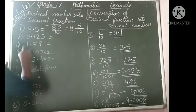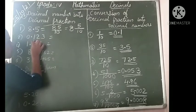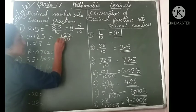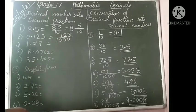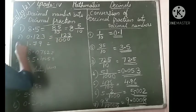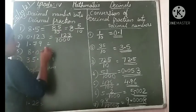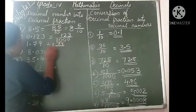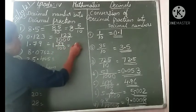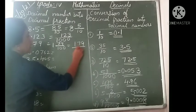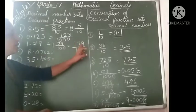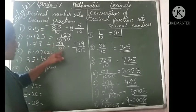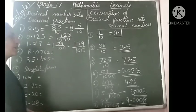Next: 0.123. Here only 0 is the whole part, so we consider just the decimal digits 1, 2, 3. There are 3 digits after the point, so the denominator is 1000. Answer: 123 by 1000. There is no whole part since it is 0. Next: 1.79. We can write two ways: 1 and 79 by 100, or as the improper fraction 179 by 100. Both are correct — the point is after 2 digits, so denominator is 100.